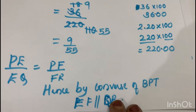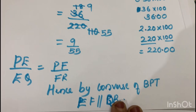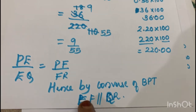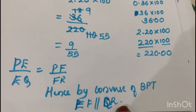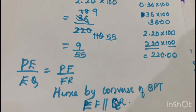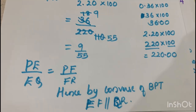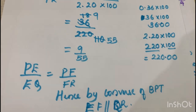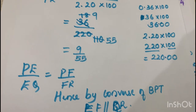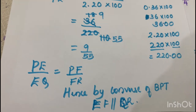EF is parallel to QR. We call it the Converse of Basic Proportionality Theorem because the ratio is the same, so we say EF is parallel to QR. Bye students!